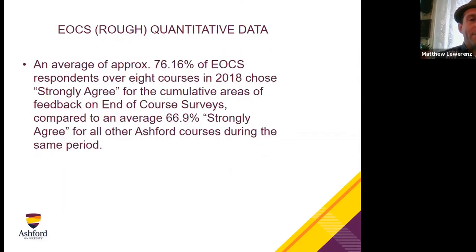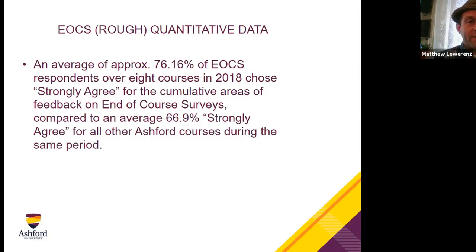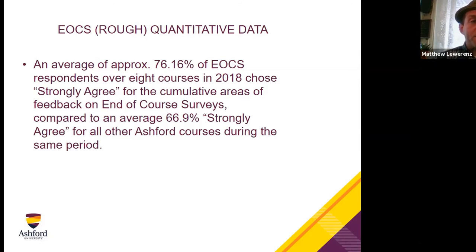Here is some rough quantitative data — not publishable by any means, but I averaged the 'strongly agree' component for each end-of-course survey across all my sections and balanced them against the average for all Ashford University courses. What I found was an average of almost 10 points higher in the 'strongly agrees' in all categories for my end-of-course surveys versus all other Ashford University courses. This is promising exploratory data pointing towards what I felt was really an overall success. I hope everyone will take a chance and do some exploring with this great function.